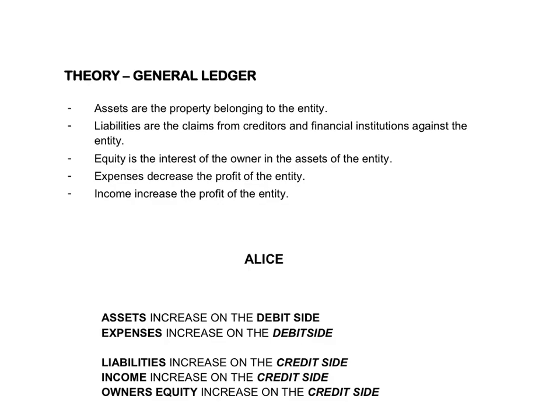Before you can record any entries in the general ledger, you must ensure that you know exactly if this is an asset, a liability, equity, expense, or income. Because depending on the elements, you will decide whether the account must be debited or credited. Remember that for every entry you complete in the general ledger, in one account you will record the entry on the debit side, and in a second account you will record the entry on the credit side.